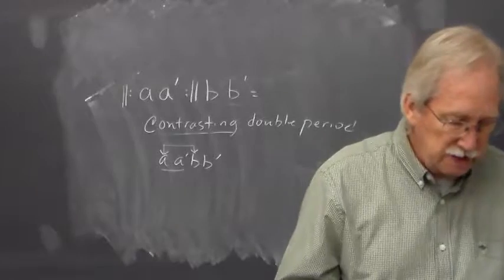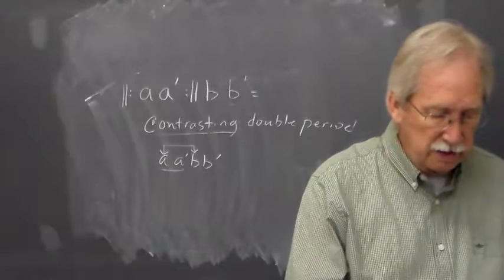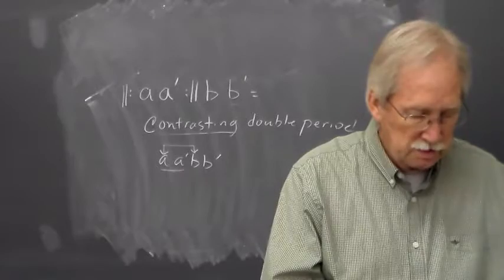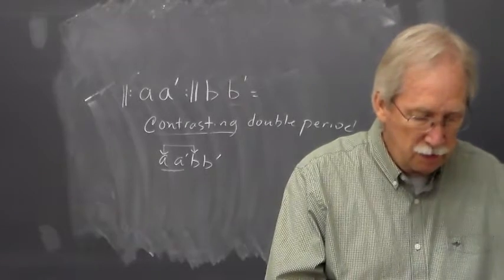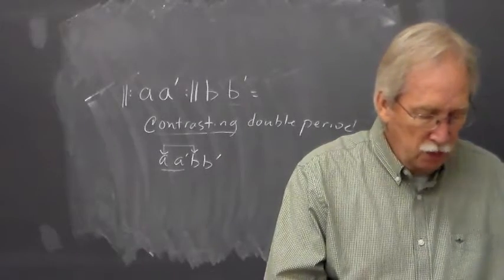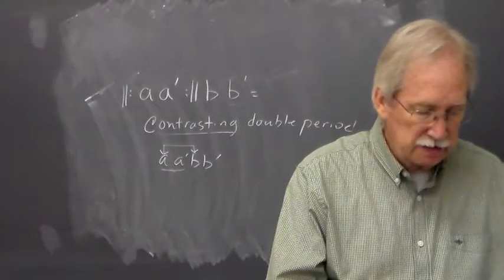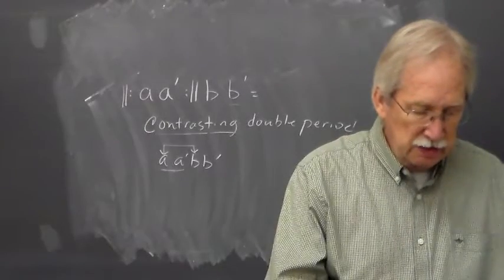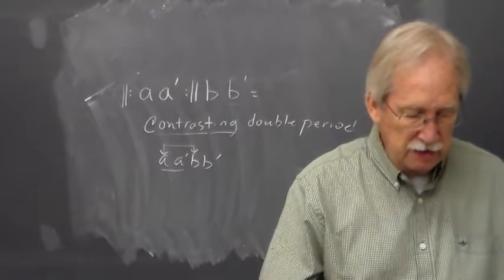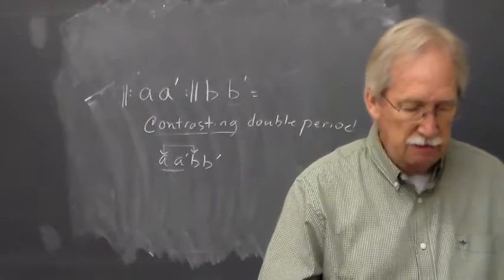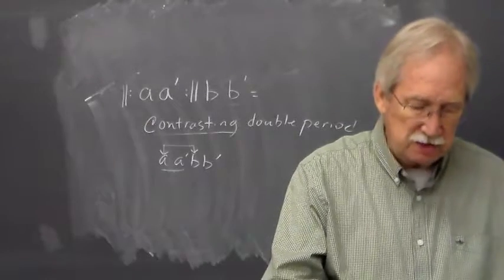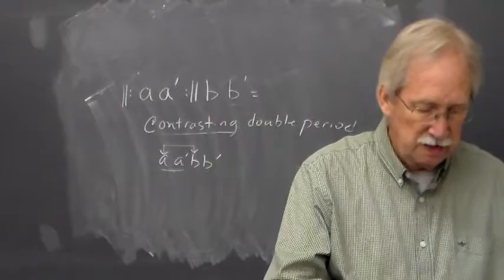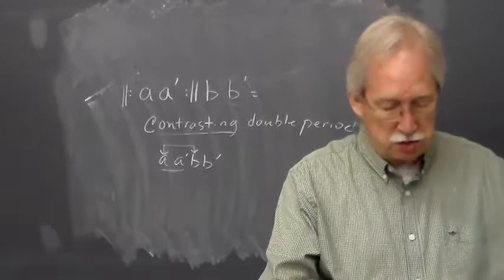Number 174 is a real clear contrasting period — very straightforward. Number 175 is in four-measure phrases, so that would be A, which is repeated, and then B, B prime, because the last measure is different from the last measure of the second phrase. Therefore that would be a phrase group.